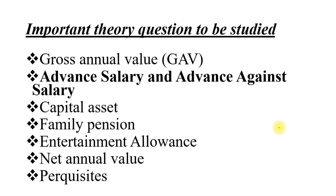Next: advanced salary and advance against salary — two different terms, so they can ask you a short note to explain both these terms. Next: write a short note on what is the meaning of capital asset, when does an asset become a capital asset, and how long do you need to hold it. Next is family pension — what is family pension and what are the various deductions you can get under family pension.